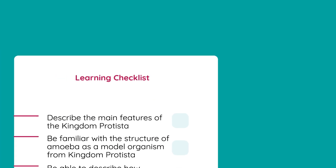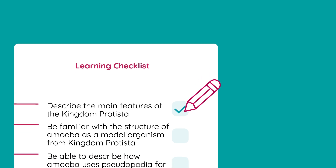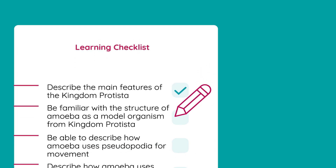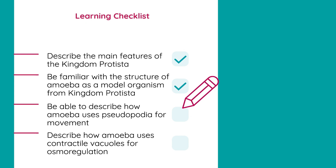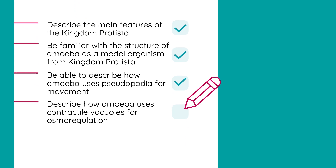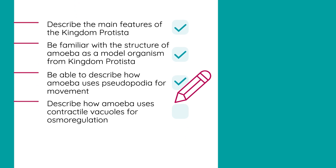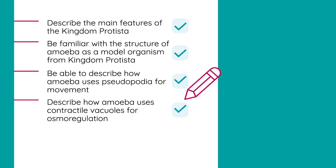So here's what you usually need to be able to do: describe the main features of the kingdom Protista; be familiar with the structure of amoeba as a model organism from kingdom Protista; be able to describe how amoeba uses pseudopodia for movement; and describe how amoeba uses contractile vacuoles for osmoregulation.